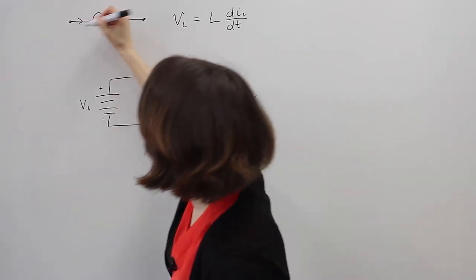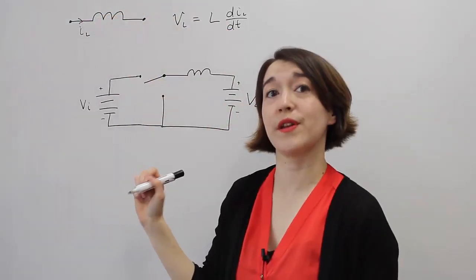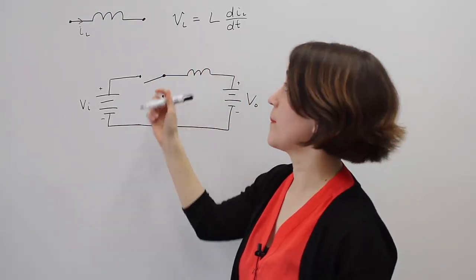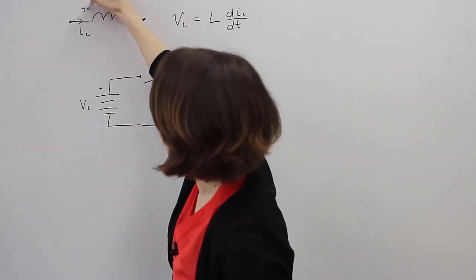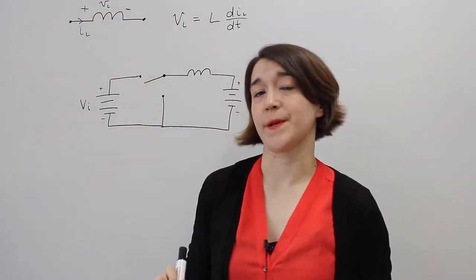So here we're going to call this IL, the current through the inductor. And then VL will be the polarity. We're going to make this positive and make this negative. So this is going to be our VL. Okay.